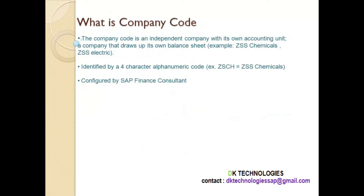What is company code? Company code is an independent company with its own accounting unit — a company that draws up its own balance sheet, meaning profit and loss transactions are made at the company code level. In SAP, company code is identified by a four-character alphanumeric code. Company code is configured by an SAP finance consultant, but as an SAP HCM consultant, you need to know the company code because it is part of the enterprise structure.